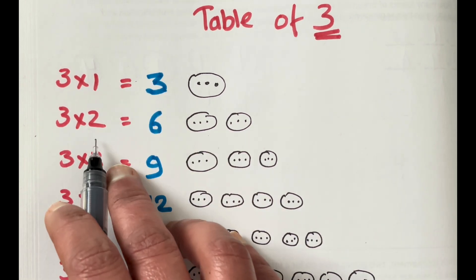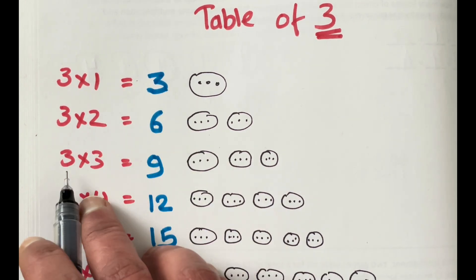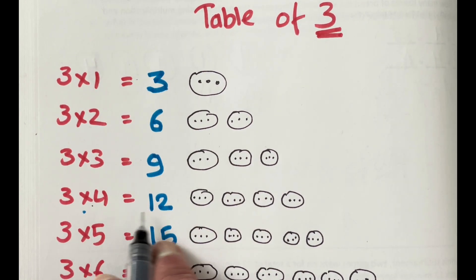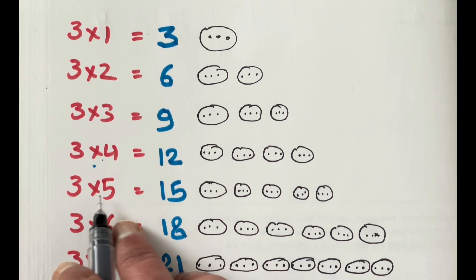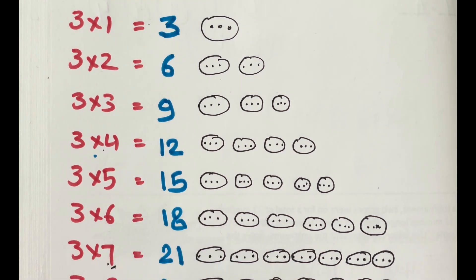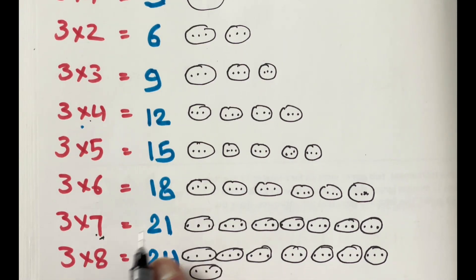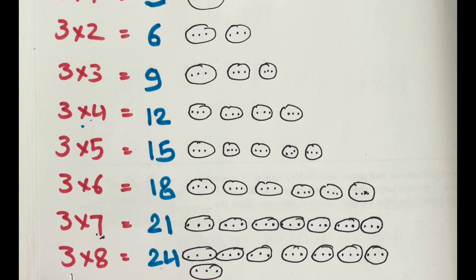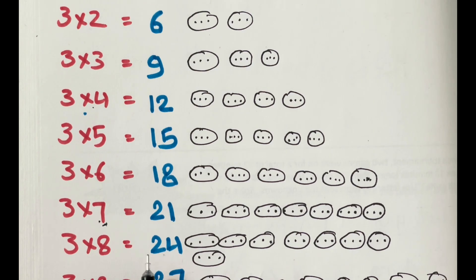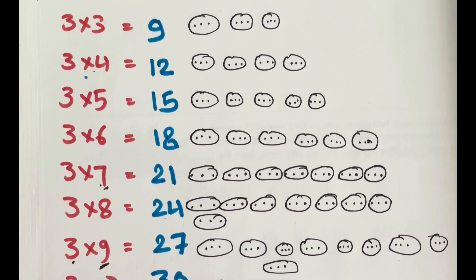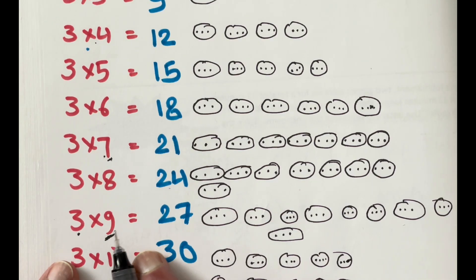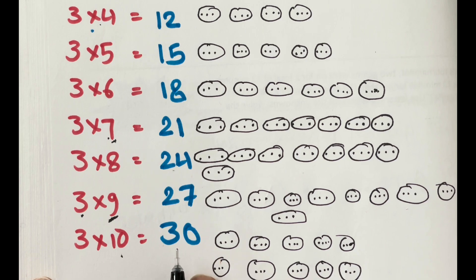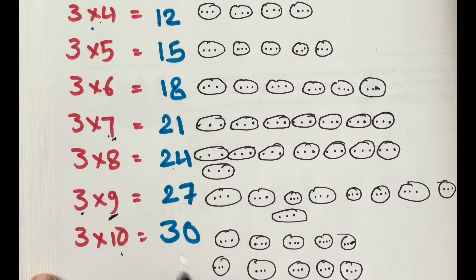Three times one is three. Three times two is six. Three times three is nine. Three times four is twelve. Three times five is fifteen. Three times six is eighteen. Three times seven is twenty-one. Three times eight is twenty-four. Three times nine is twenty-seven. And three times ten is thirty.